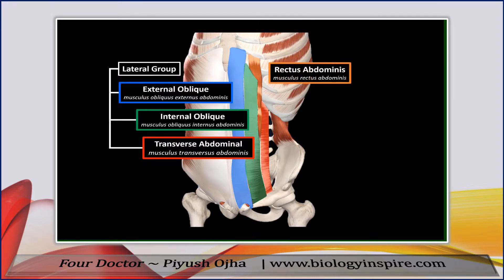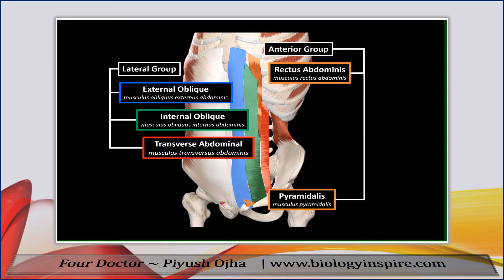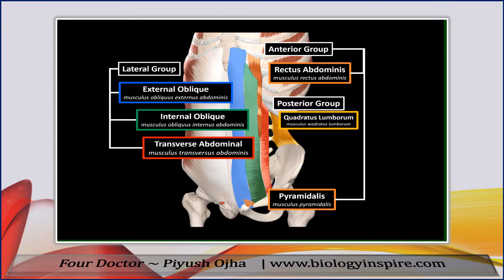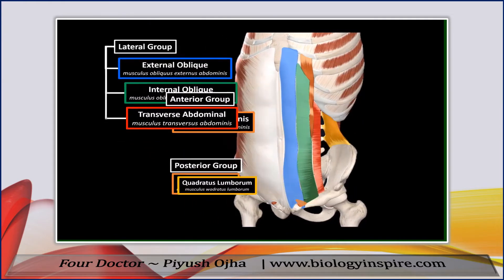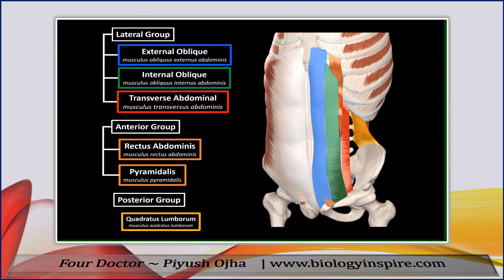Then we have the rectus abdominis and a tiny muscle called the pyramidalis. These two are considered the anterior group of muscles. The posterior group has only one muscle, called the quadratus lumborum. So these are the muscles we're going to focus on in this video.